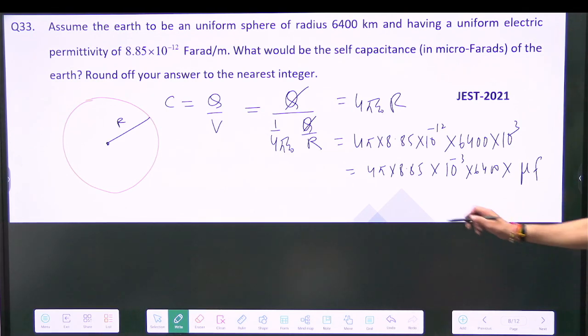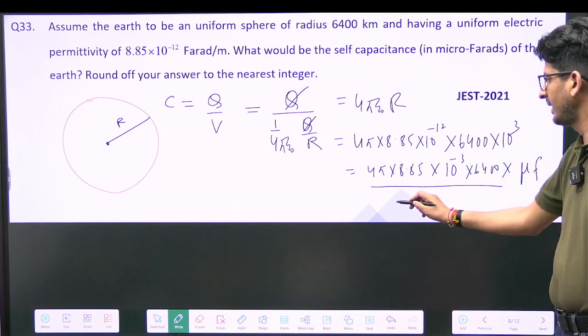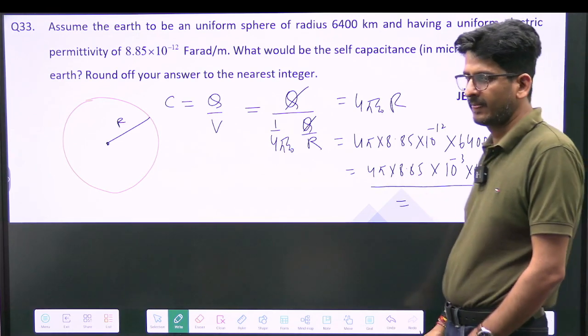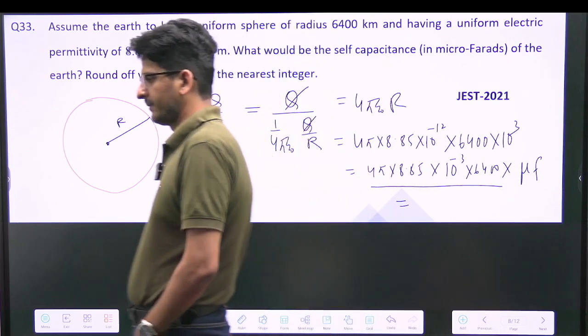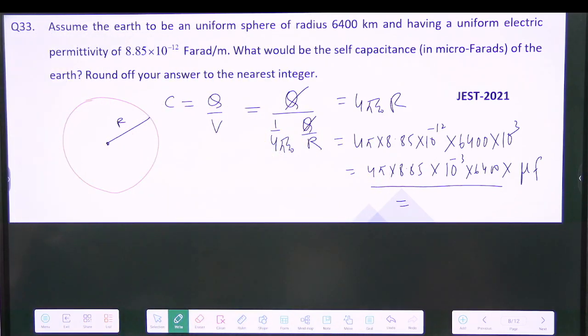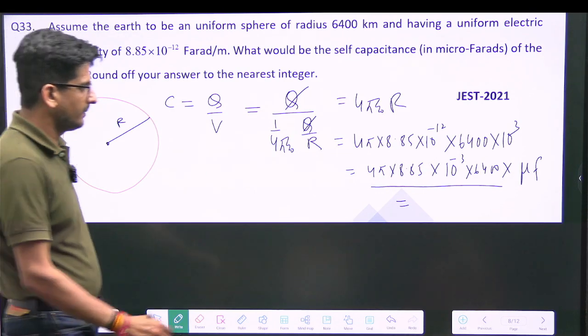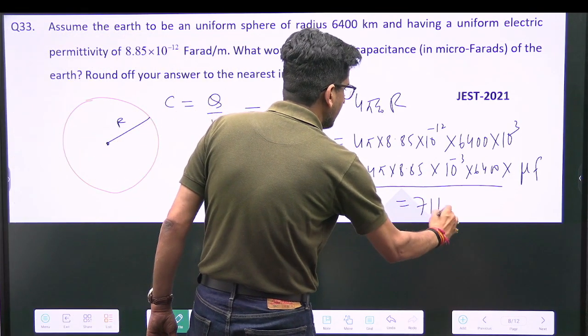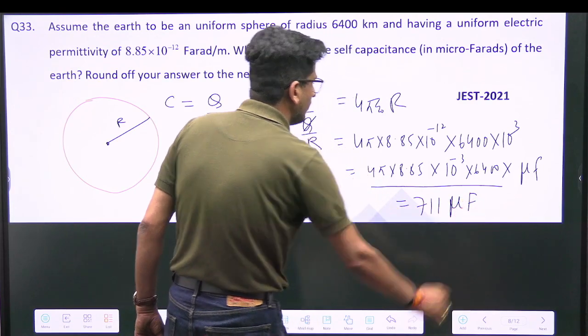So you can calculate this quickly. Somebody tell me quickly. 711 microfarad. 700? 711 microfarad. Yes. So it will be 711 microfarad.